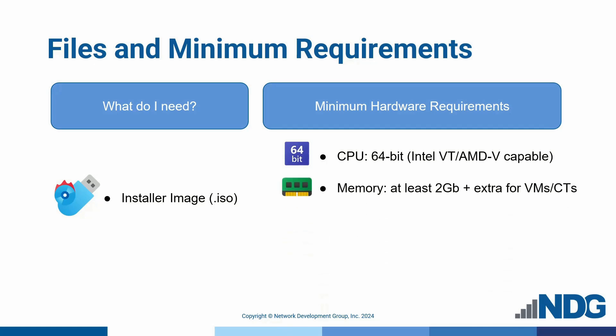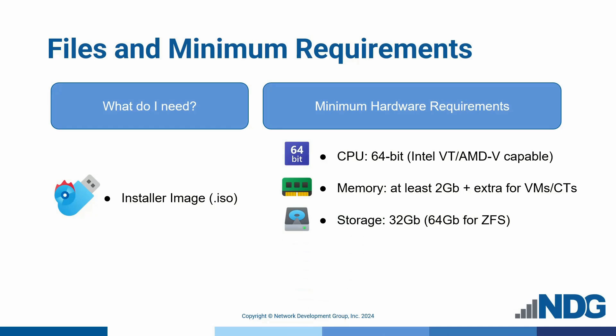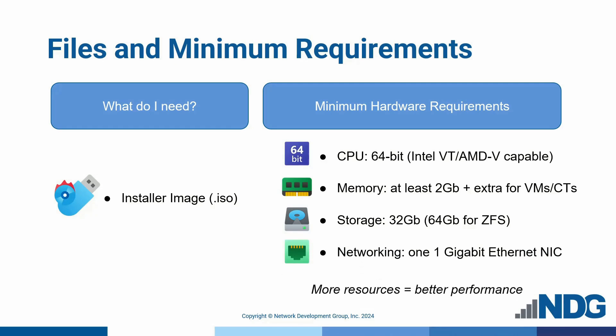At least 2GB of RAM is necessary, plus extra RAM to accommodate any virtual machines or containers you plan to run. A minimum of 32GB of storage is required, though we recommend at least 64GB if you're using ZFS for storage. You'll need at least a 1GB Ethernet NIC for network connectivity. Remember, more resources mean better performance, especially as you add virtual machines and containers.